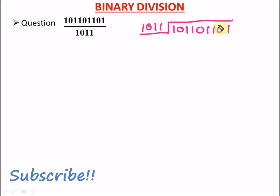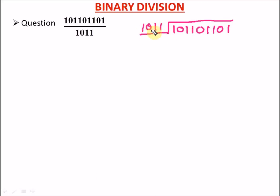In elementary division, you put the divisor outside and the dividend inside. The first thing we do is ask: can 1011 go into 1? No. Into 10? No. Into 101? No. Into 1011? Yes. So we write down a 1, and 1 times 1011 gives us 1011.